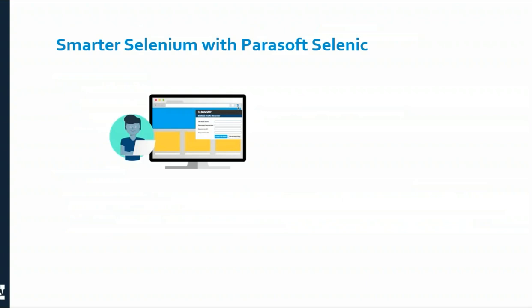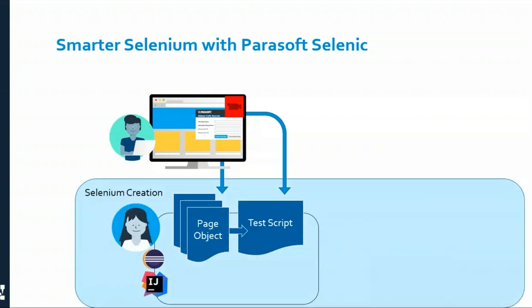Thomas will take you through Selenic and SOAtest Smart API. Starting with Selenic: we'll be interacting with a web-based application and leveraging a traffic recorder — a Chrome plug-in — that records the different actions we take with our web application to create test scripts within our Selenium environment. Importantly, this creates scripts leveraging the page object model so that we can create expandable scripts and continuously record and build upon existing scripts and page objects without rewriting everything each time.